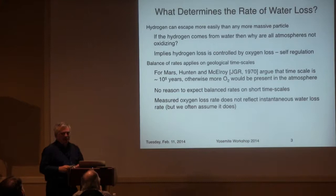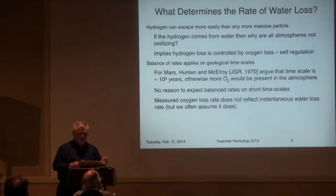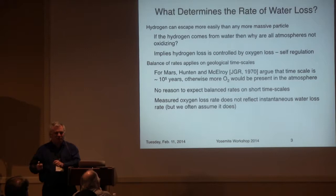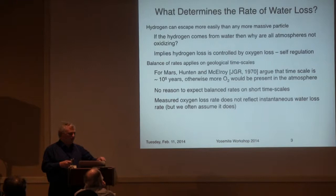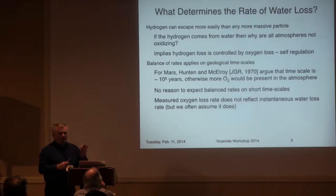This argument applies on geological timescales, not short timescales — for Mars it's 10⁵ years. So why do we make the assumption that if we know the oxygen outflow rate, we know the water flux now? It's got to reach too far down through the ionosphere and atmosphere to the reservoirs to have that rate be directly controlled right now. Personally, I think that's a fallacy, but people make that assumption quite a lot, especially for Venus and Mars.